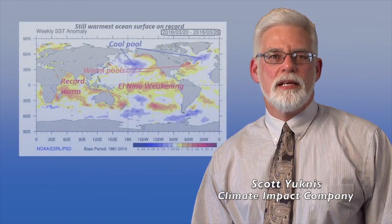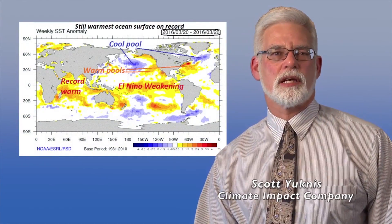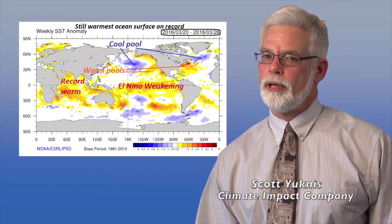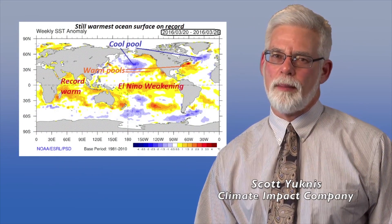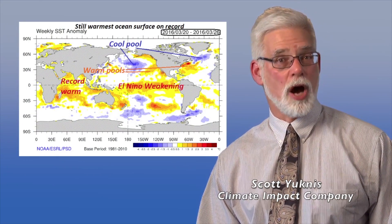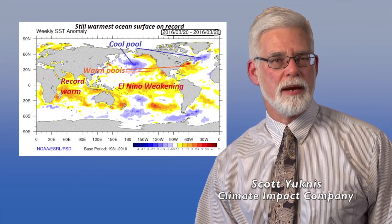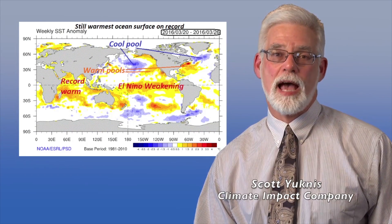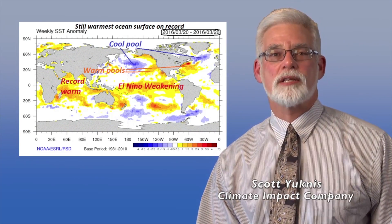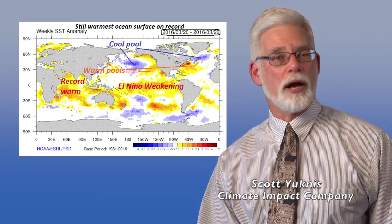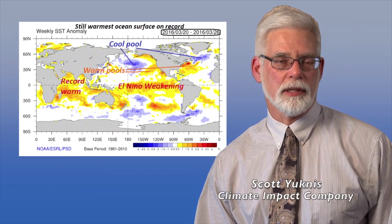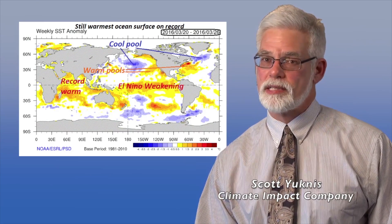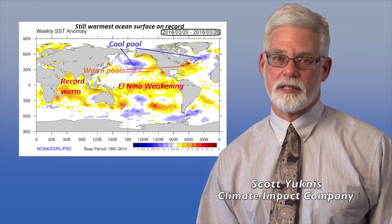I'm Scott Eukness for Climate Impact Company. Sea surface temperature anomalies across the globe are how we judge climate going forward, both in an observational standpoint and seasonal prediction. Right now, across the globe we have record warm sea surface temperature anomalies, which have been with us now since 2015.